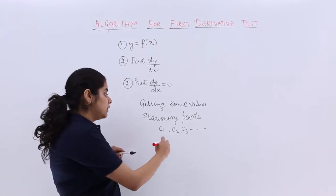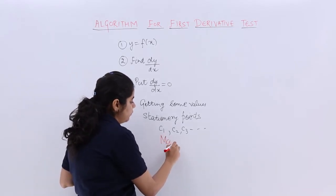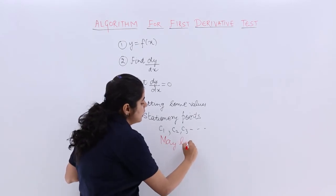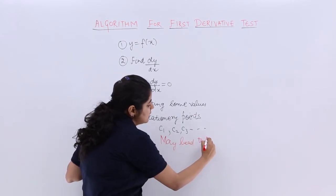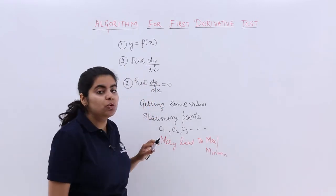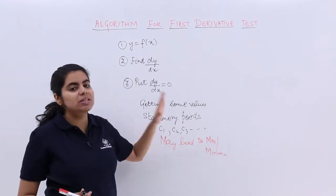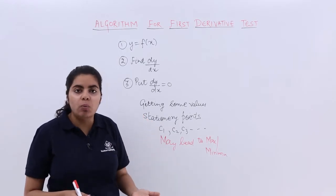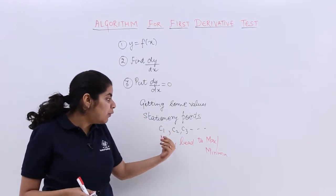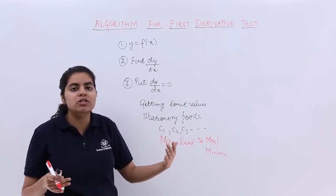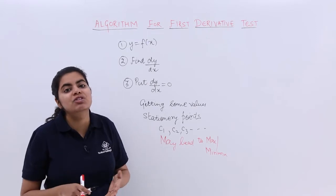After you have got these stationary or critical points, these points are very important because they may lead to - it is not that all of them will give you maxima or minima. Some of them may lead to maxima and some of them may lead to minima. So it is very important that you do not say that okay, these are the three points that we have obtained, the solution is given to us.